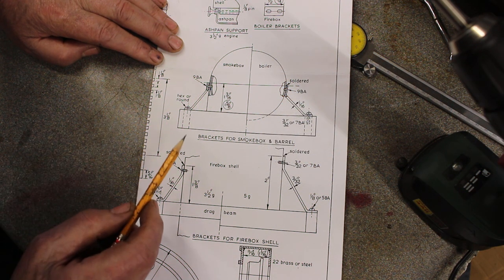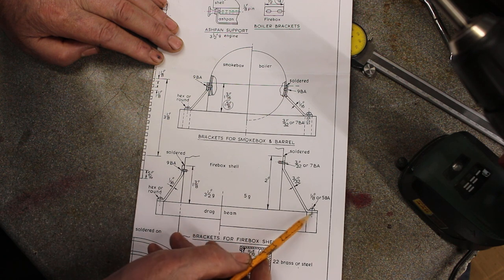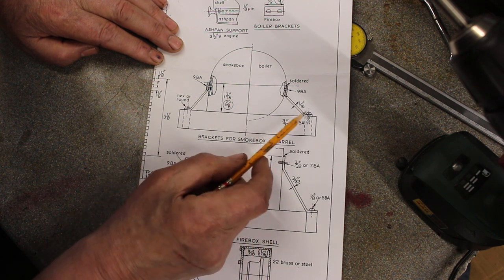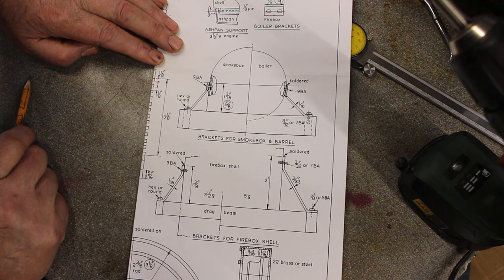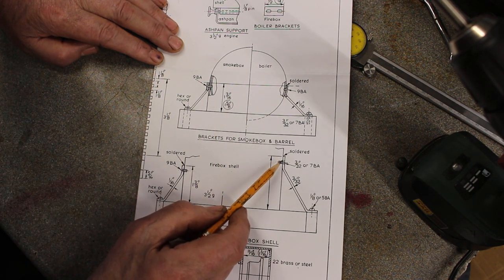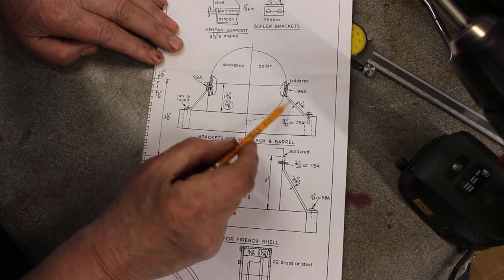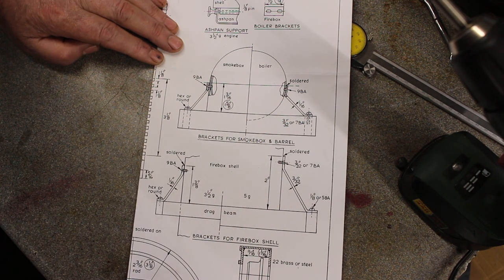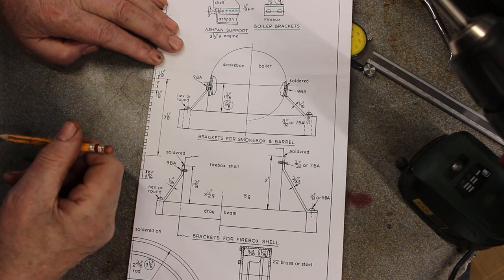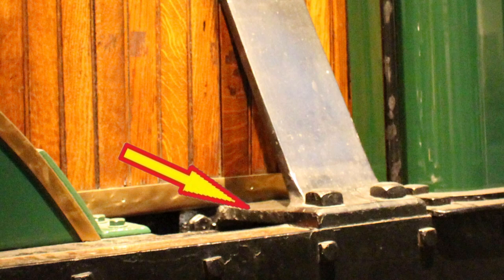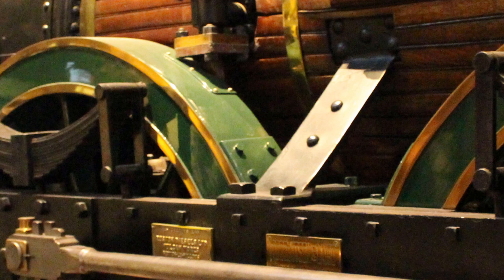This is a drawing showing the boiler bracket details. This is the bracket at the firebox end and this is the bracket that attaches to the boiler barrel. This drawing shows the model having only one bracket component, however when you look at the full-size locomotive, it has a horizontal component. Therefore I'm going to model these brackets based on the full-size locomotive and include the horizontal component.